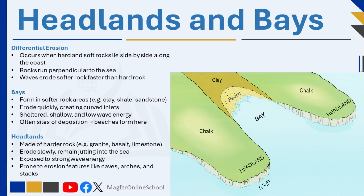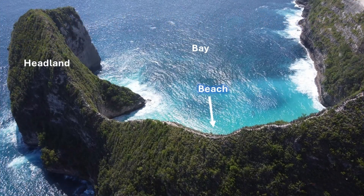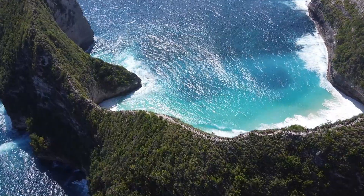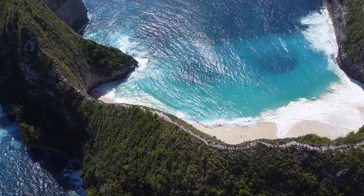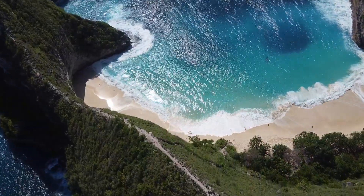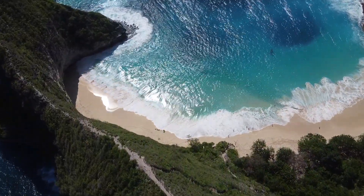In contrast, harder rocks like granite, basalt, or limestone are more resistant to the erosive force of waves. These rocks erode much more slowly and remain protruding into the sea as headlands. A headland is a prominent, high, rocky piece of land that juts out from the main coastline. Because headlands are exposed to the full force of incoming waves, they experience intense erosion, especially at their base, where features like caves, arches, and stacks may eventually form.